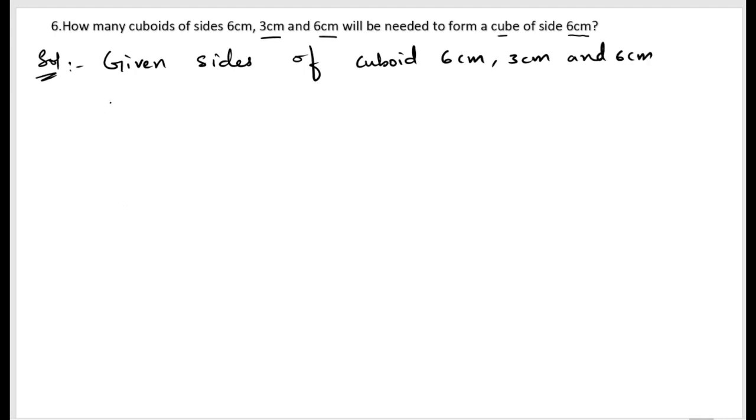We know that volume of a cuboid is length × breadth × height. Let us write down volume of a cuboid. The formula is length × breadth × height. Here, length is 6cm, breadth is 3cm, and height is 6cm.